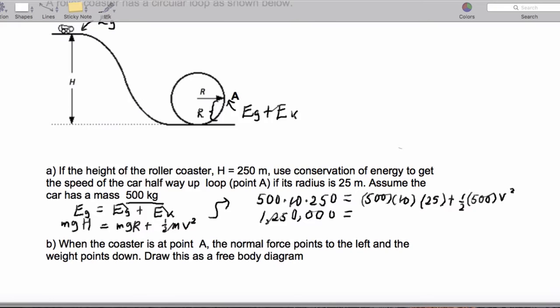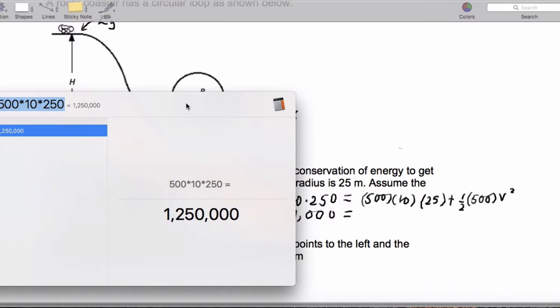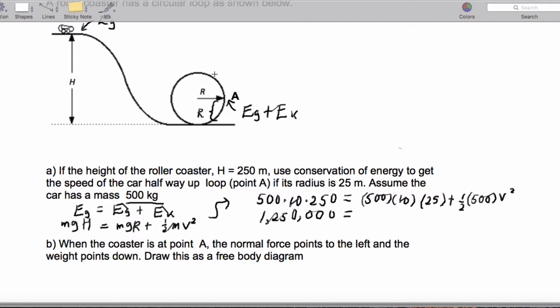Equals, and then this is 500 times 10 times 25. So then we're going to end up getting 125,000 here. And then finally, we'll get plus 250 V squared.